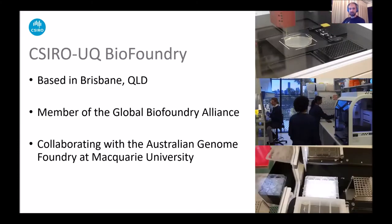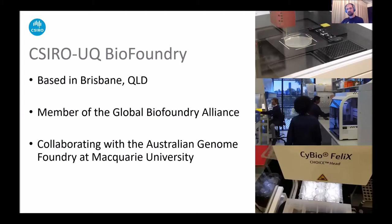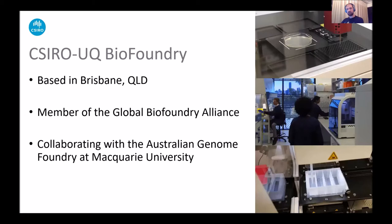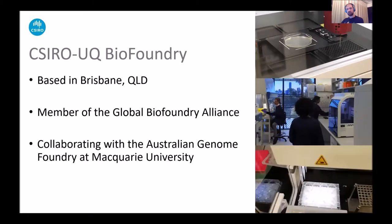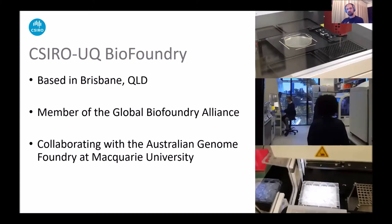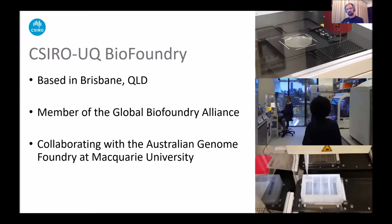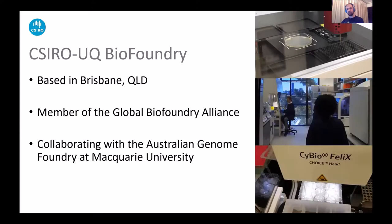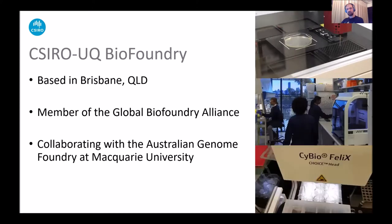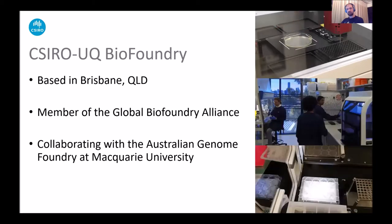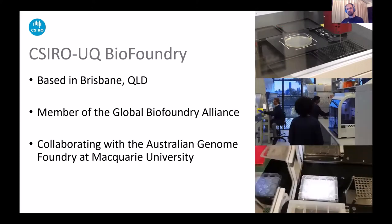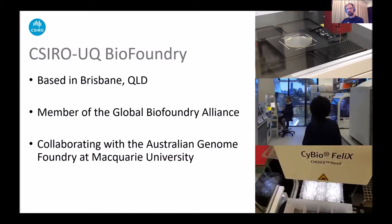So how do we do this? We are fortunate enough to have access to the CSIRO BioFoundry based in Brisbane. And we are a member of the Global BioFoundry Alliance. We collaborate with the Australian Genome Foundry in Macquarie University. And basically what we are is a semi-automated facility where we can process many more variants of different genetic constructs much faster and in much reliable and reproducible way, which gives us this volume of data set that we can use for machine learning.